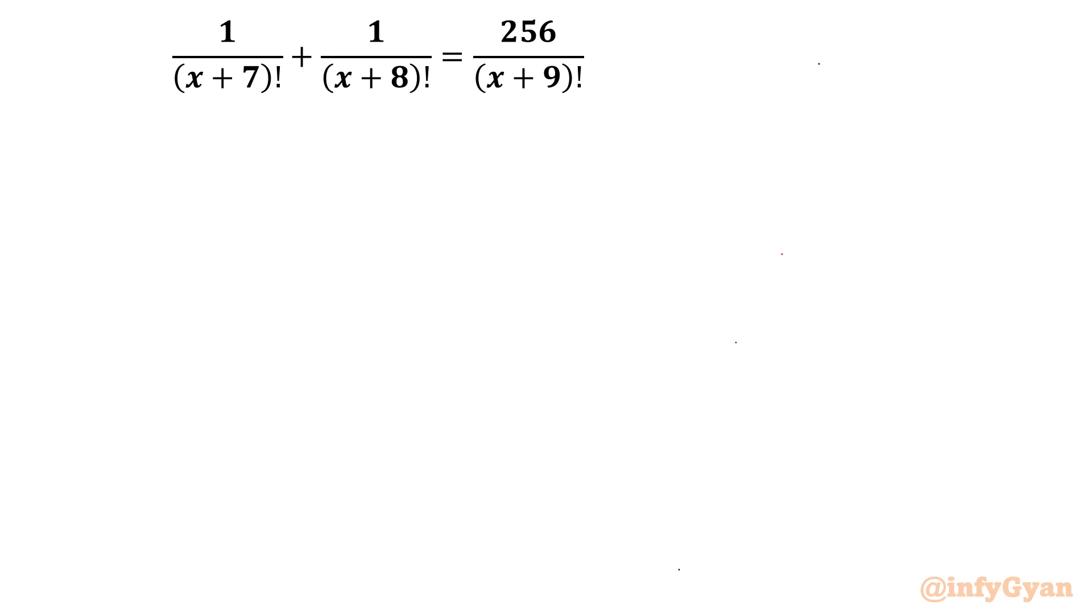The equation is 1 over x plus 7 factorial plus 1 over x plus 8 factorial equal to 256 over x plus 9 factorial. While solving this problem, we will use factorial notation, factorial properties, recursive formula and quadratic equation also.